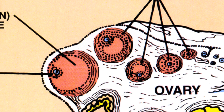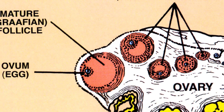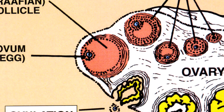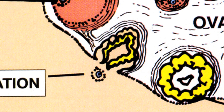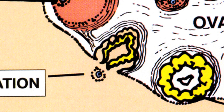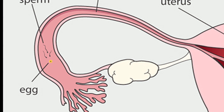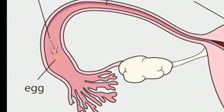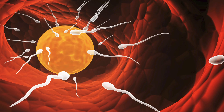Early in the cycle, a single egg begins the process of maturing inside a fluid-filled sac called the follicle. The follicle increases in size during the first half of the menstrual cycle. Halfway through the cycle, the follicle pops or ruptures, releasing the egg, which then passes into the fallopian tube. This is called ovulation.